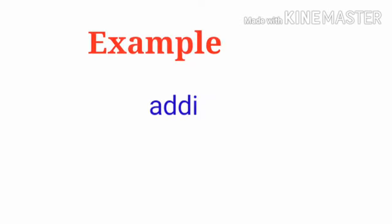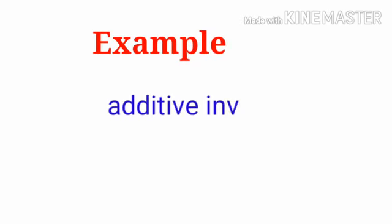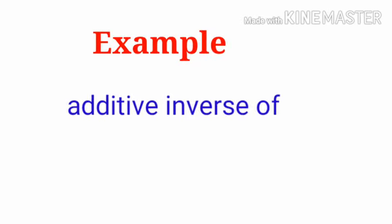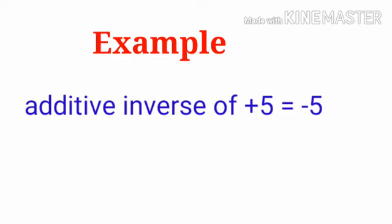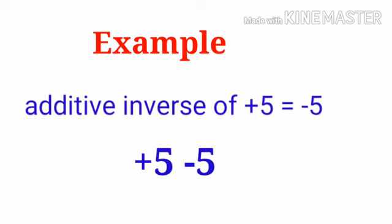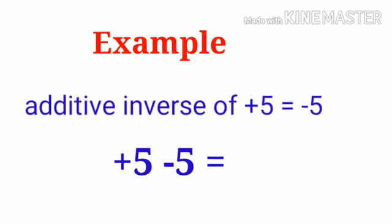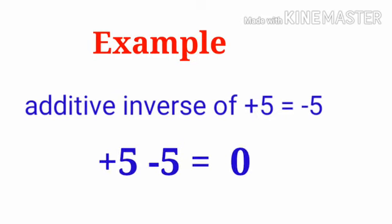Examples. The additive inverse of plus 5 equals minus 5. Why? Because plus 5 and minus 5 added together becomes 0.